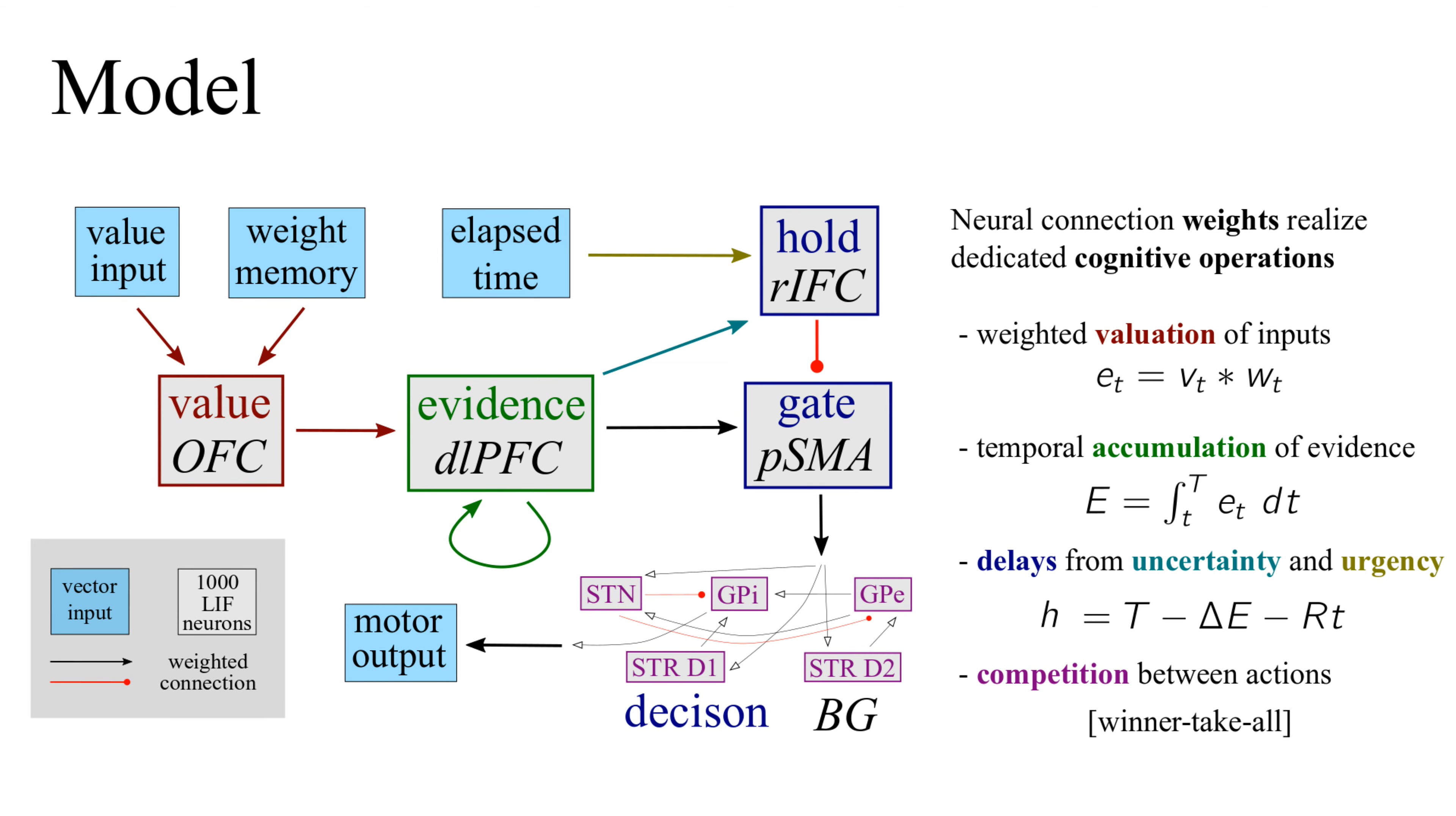Each neural connection in our model is responsible for performing a particular cognitive operation. The value population represents the value and weight of the current cue, multiplies them, and returns the result. The evidence population maintains an estimate of the accumulated evidence for each option using recurrent connections.